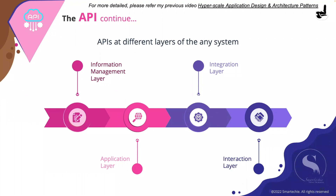That microservice is generating lots of metrics related to load, the number of tasks running, and the number of concurrent processes running under it — just as an example. If you want to build a dashboard on top of that to monitor those things, you need to build a set of APIs that will retrieve that kind of information and those details from the application itself.